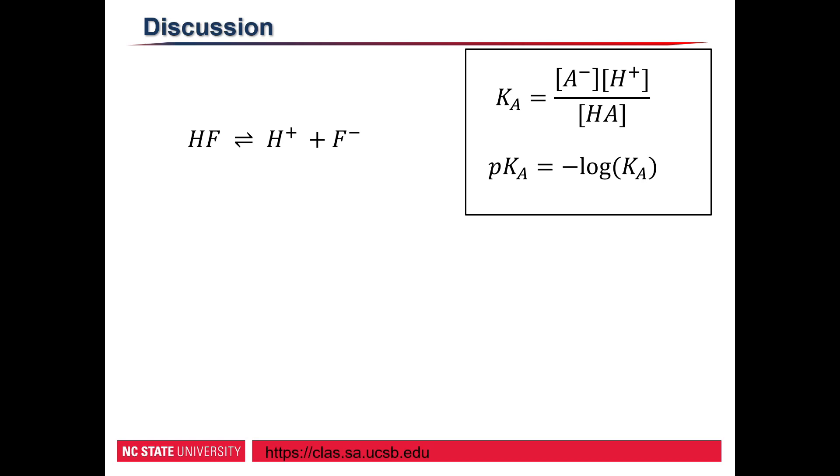Looking at this example on the left of hydrofluoric acid, we can already tell that something is off. This reaction doesn't go back and forth equally, and these types of reactions tend to favor either the products or the reactants.